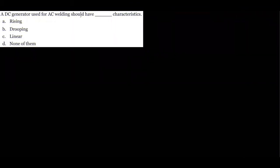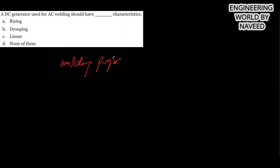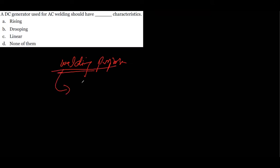The next MCQ is: a DC generator used for welding should have a rising, dropping, linear, or none-of-these characteristic. For welding purposes we use a differential compound DC generator.